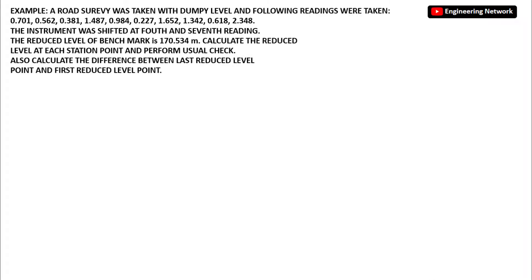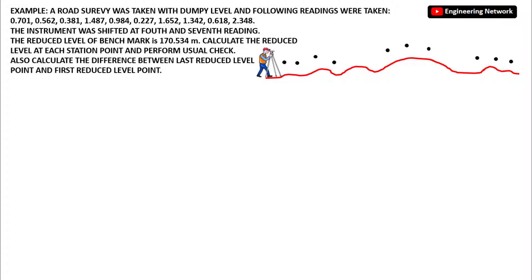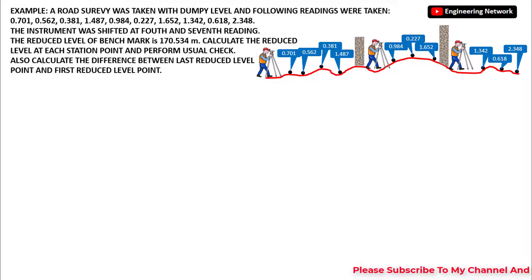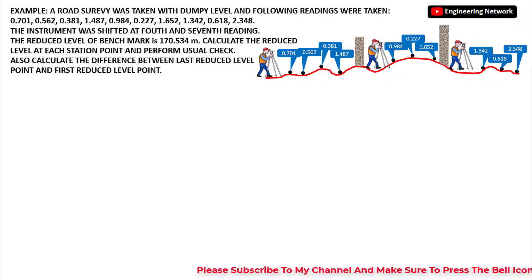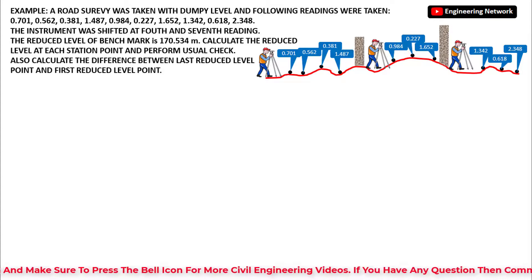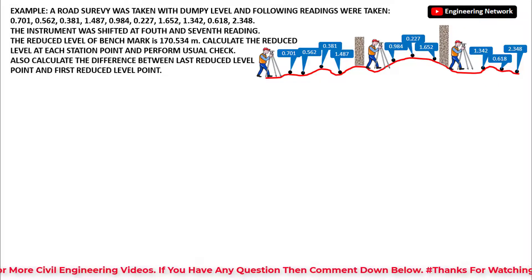The question states that a road survey was carried out with the help of a dumpy level and the following readings were taken. The instrument is shifted at the 4th and 7th readings, and the reduced level of the benchmark is 170.534 meters. Calculate the reduced level at different stations, perform usual checks, and calculate the difference between the reduced level at the last station and the first station.